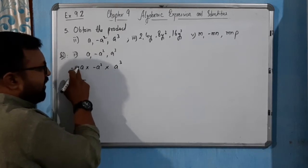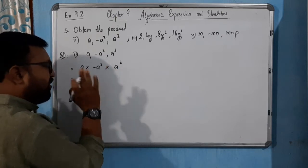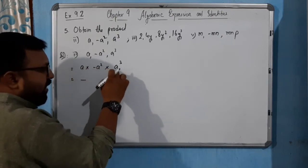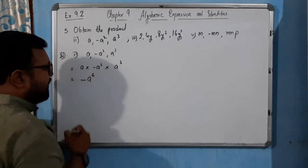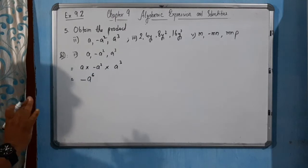Then constant - there is no constant, only 1, 1, 1, so answer will be 1. But a, a square, a cube means 3, 4, 5, 6, so ultimately a to the power 6. So answer is finished here.